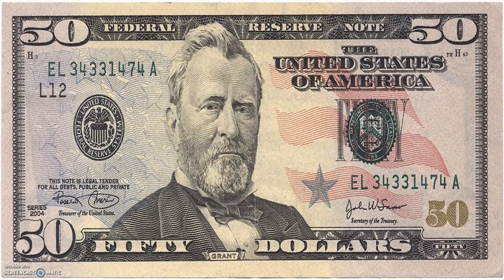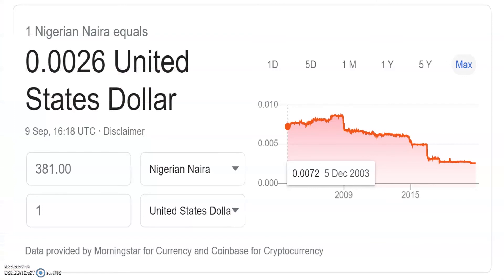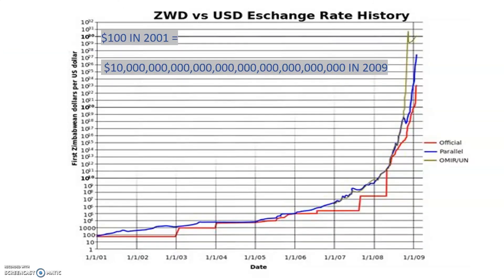Over the years, the US dollar and several other fiat currencies have greatly devalued, and this has proven that fiat currency is not a true store of value. One of the major functions of money is to be a store of value, and if fiat money does not store value over a long period of time, it cannot truly be regarded as money or a true store of value. In our next video, we will start talking about cryptocurrency, blockchain technology, and why exactly it is the future.